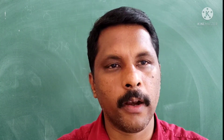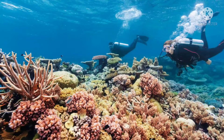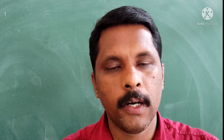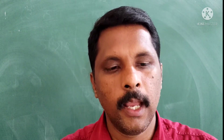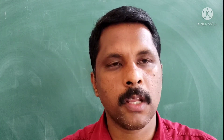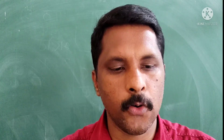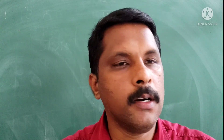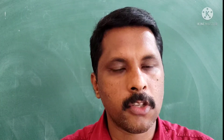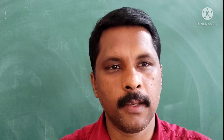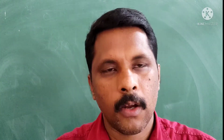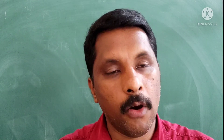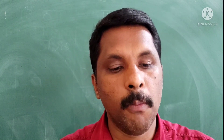Now, the Great Barrier Reef of Australia is the largest coral reef in the world. It stretches over 1,900 kilometers along the northeast coast of Australia in the Pacific Ocean.